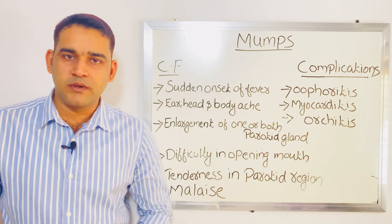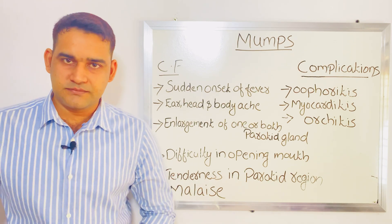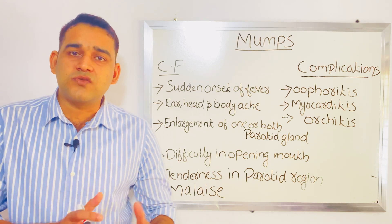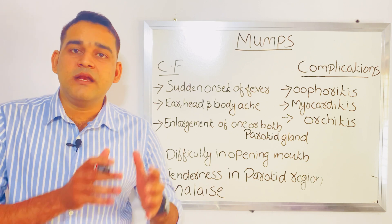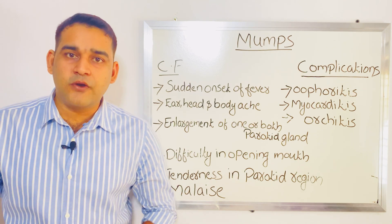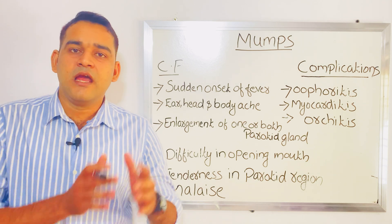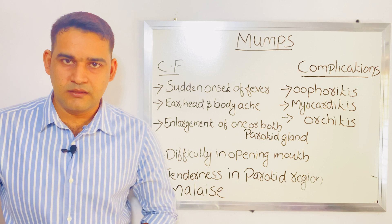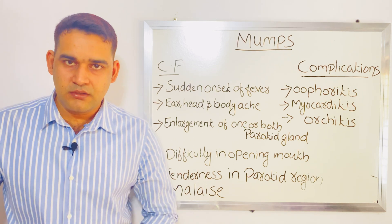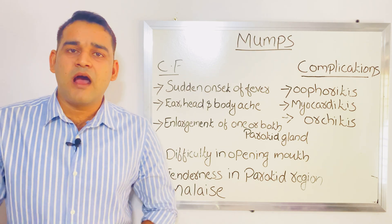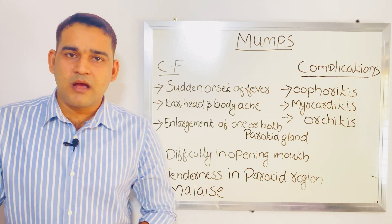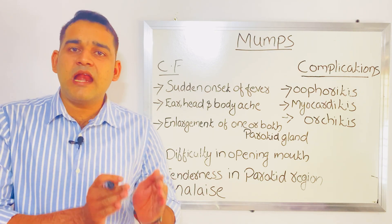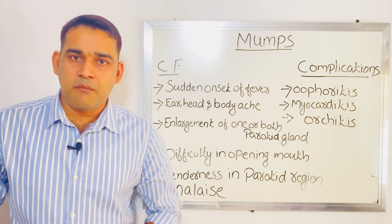Mumps mainly affects the parotid gland, which is a salivary gland situated near the ear. We can define mumps as an acute infectious disease caused by an RNA virus of the mixovirus group, characterized by fever and enlargement of the parotid gland.